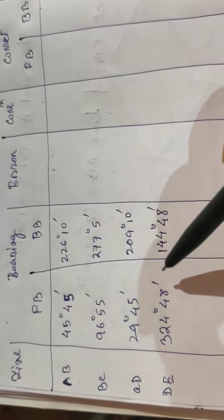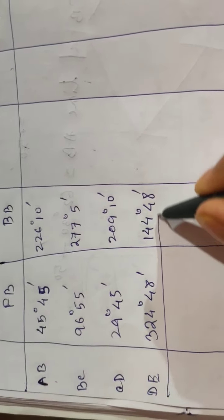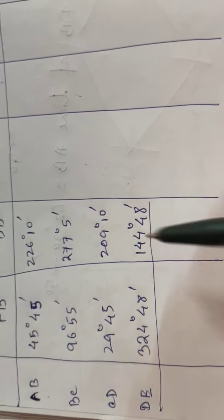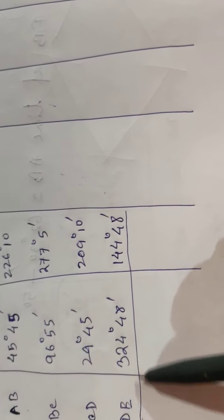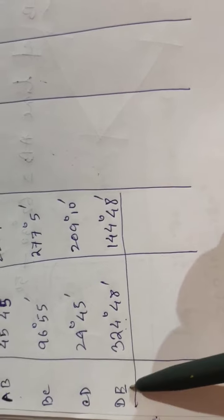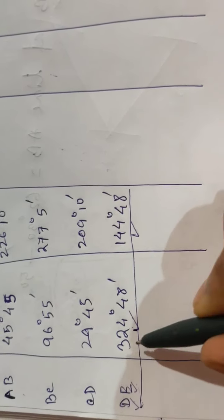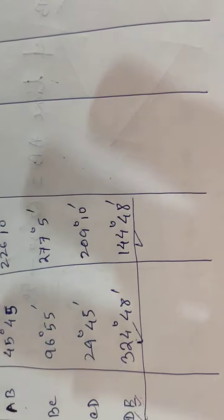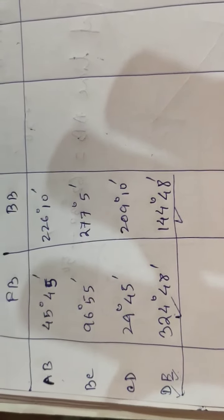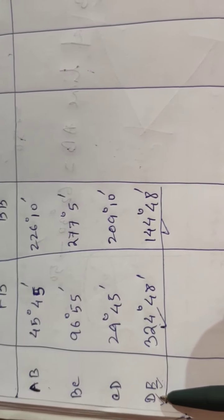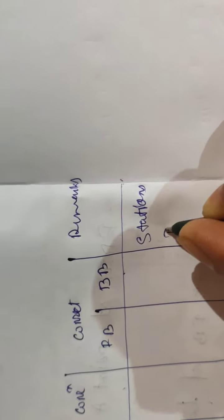By checking the difference between fore bearing and back bearing of all the lines, we found that line DE is the only line that has a perfect difference of 180 degrees. If line DE has a perfect difference of 180 degrees, that means station D and station E are free from local attraction. So we will write here: station D and E are free from local attraction.